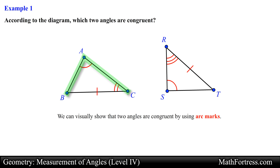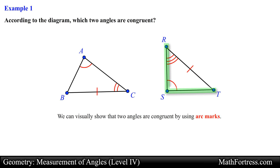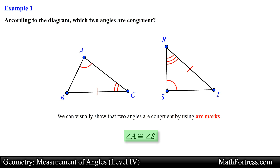The first triangle has a single arc mark at angle A and a double arc mark at angle C. The second triangle has a triple arc mark at angle R and a single arc mark at angle S. Two angles will be congruent if they have matching arc marks, so angle A and angle S are congruent. This is our final answer.